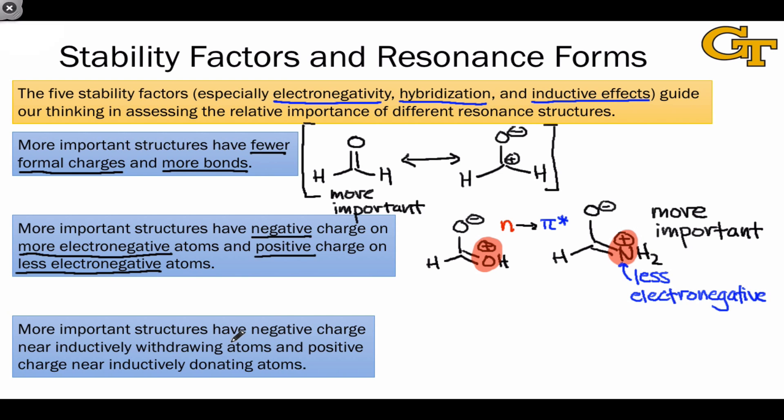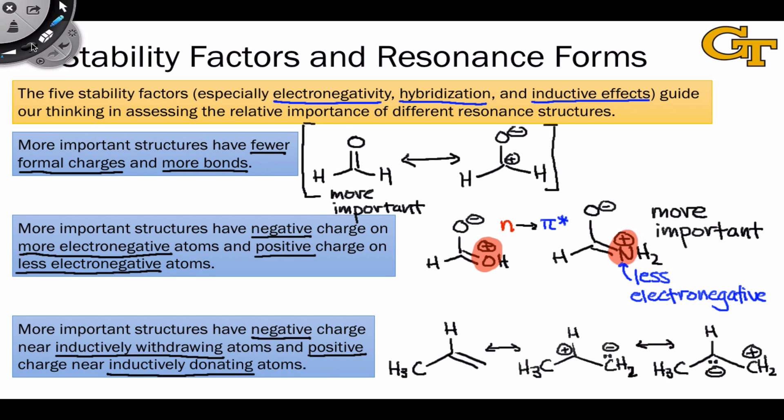A somewhat related idea uses the notion of inductive effects. More important resonance forms have negative charge near inductively withdrawing atoms, and positive charge near inductively donating atoms. A great example of this phenomenon is found in the context of substituted alkenes. We could draw two resonance structures for the alkene shown here, by pushing the pi electrons in the double bond to the left or to the right. The two resonance forms are provided here, and the thing to notice is that the CH3 group bound to one of the carbons of the alkene is going to act as an inductively donating group. It will donate electron density toward the other atoms of the molecule.